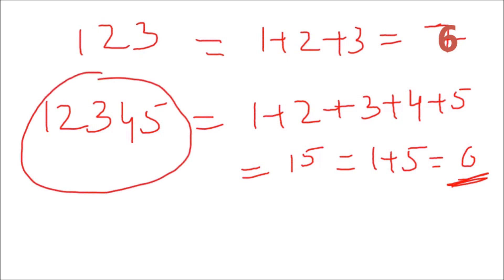So to find the digital root of a number, add all its digits. If the sum is more than nine, add the digits of that sum again. The single digit obtained at the end is the digital root of the number.